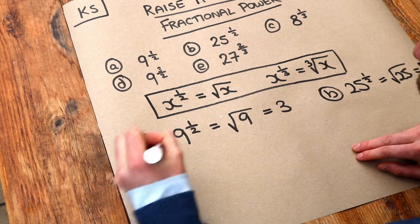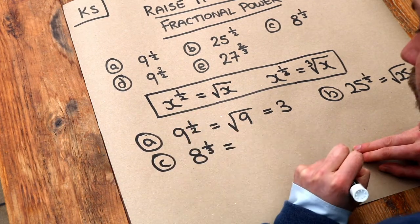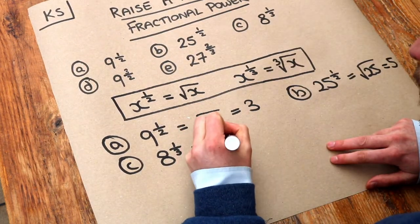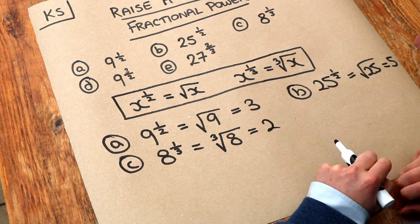And c, we've got 8 to the power of a third. Well, a power of a third means you cube root it. So we're going to cube root 8, and that gives us 2, because 2 cubed is equal to 8.